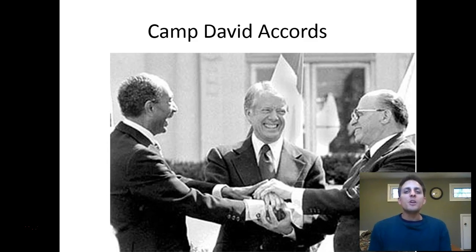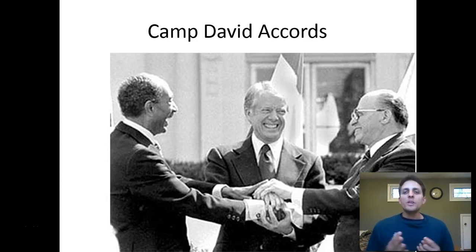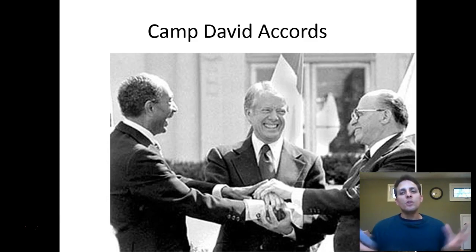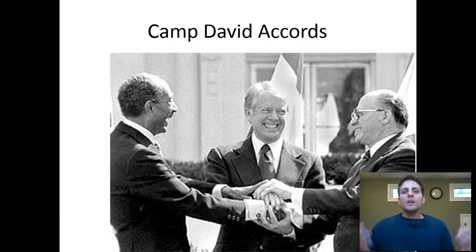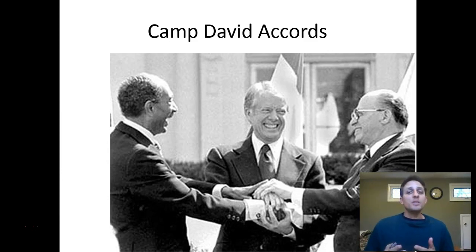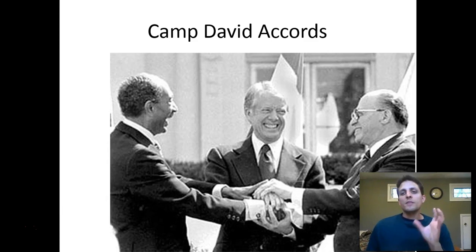Something that famously Jimmy Carter presides over is the Camp David Accords, which are peace talks between the Egyptian leader and the Israeli leaders of the era. The Palestinian-Israeli wars and the wars between surrounding Middle Eastern countries are huge problems during the 1970s. Carter plays global negotiator and global peacemaker — he invites these leaders to Camp David, the presidential retreat, to hammer out their problems, and they do sign a peace accord. The Egyptian president is eventually going to get assassinated for signing this peace accord, but it is a big step in the Middle East and shows Carter's moral approach to foreign policy.